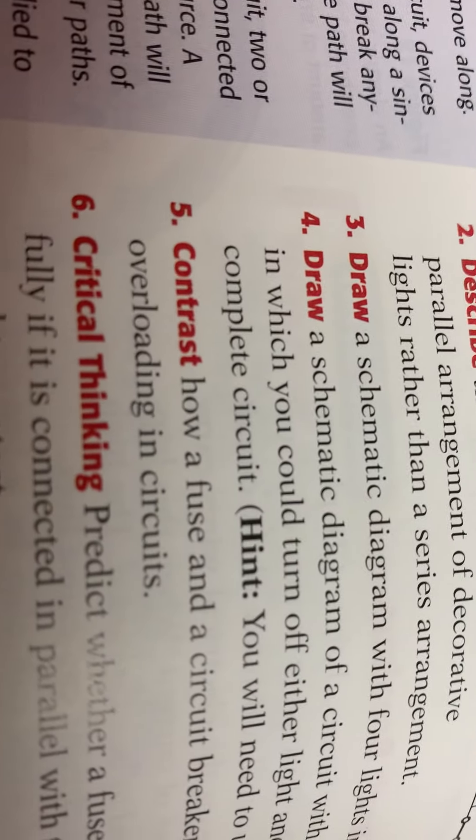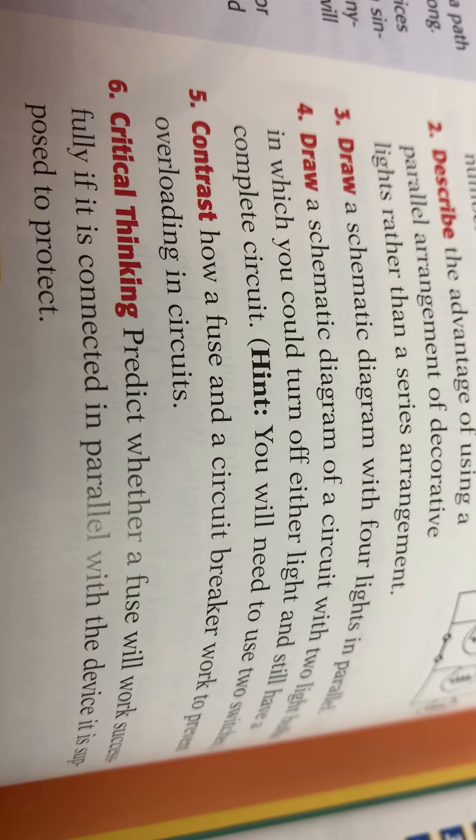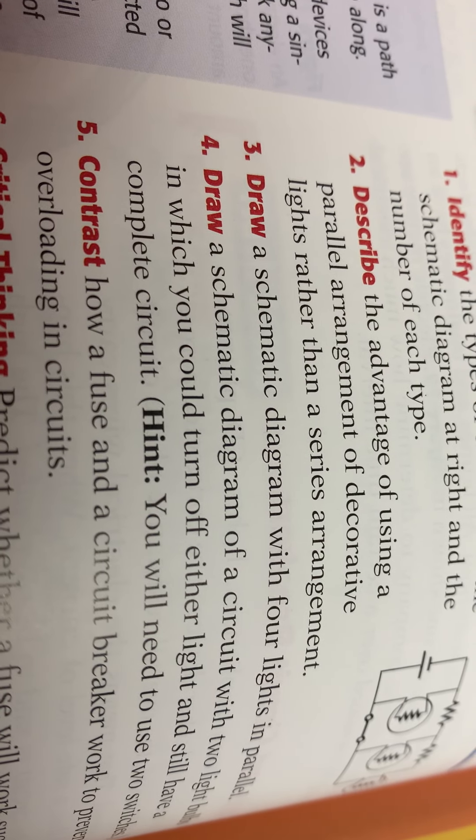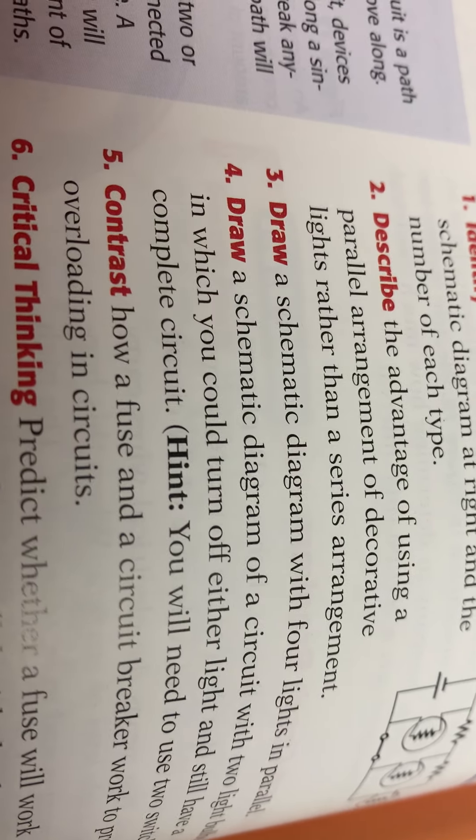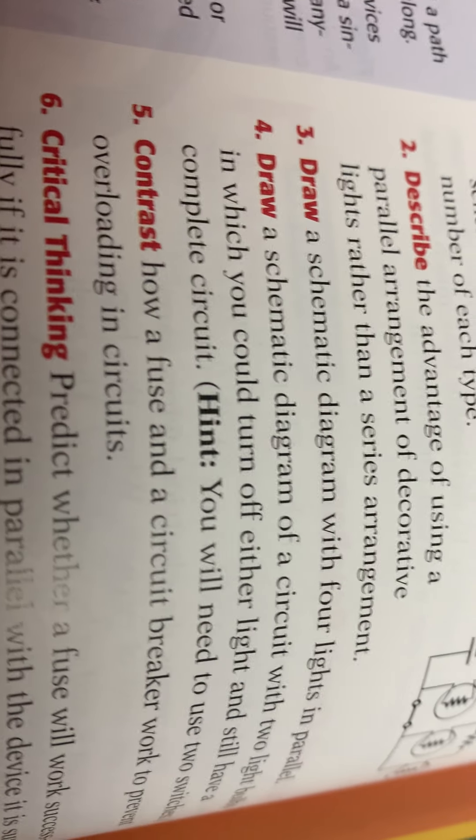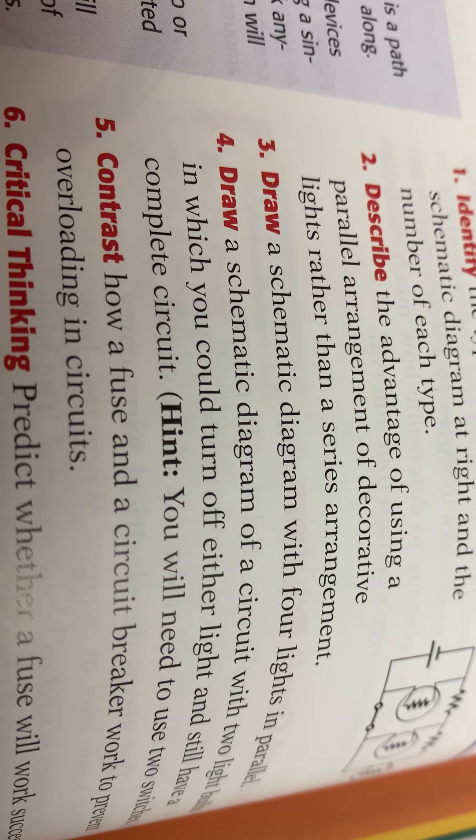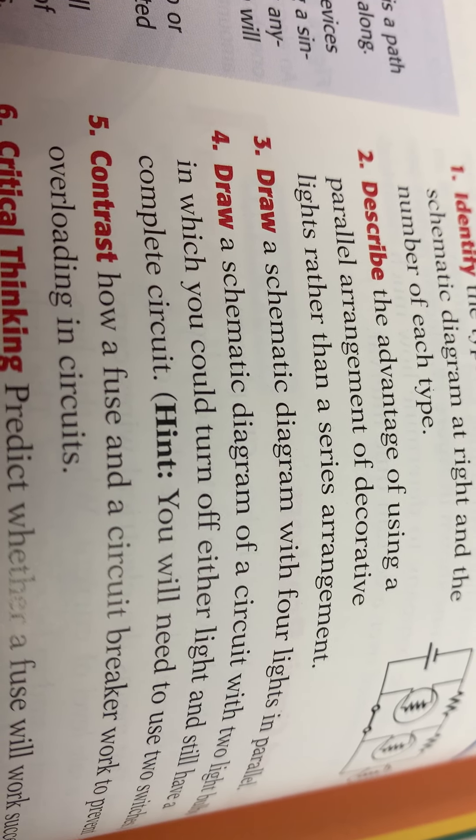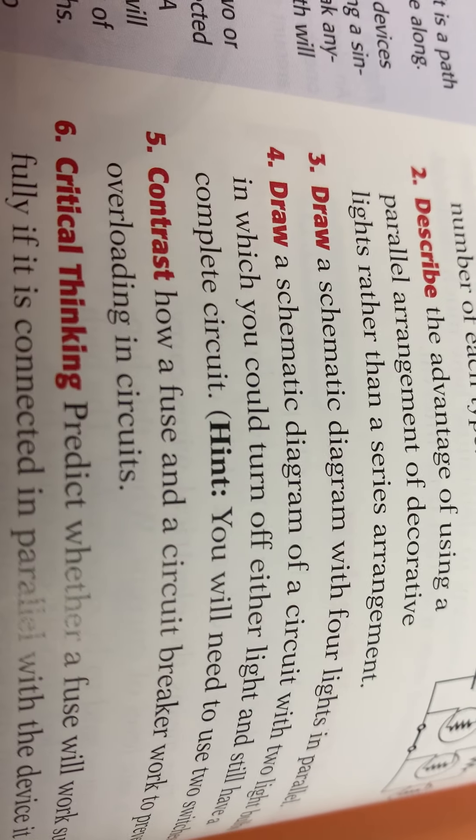Number five, contrast how a fuse and circuit breaker work to protect overloading circuits. A fuse melts, we call it more commonly popping, where a circuit breaker trips. You have to reset it and reuse it, but a fuse, once it pops, you got to put a new fuse in.